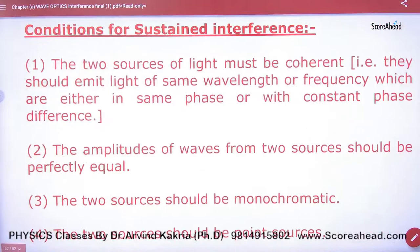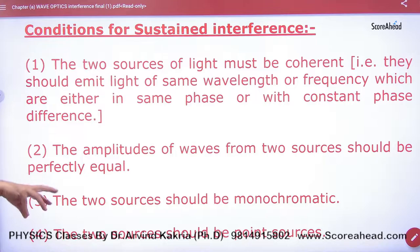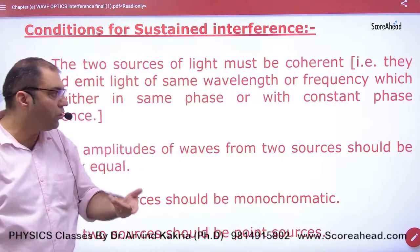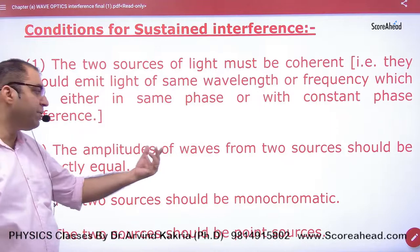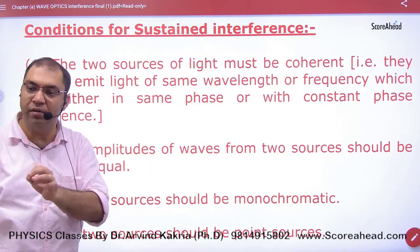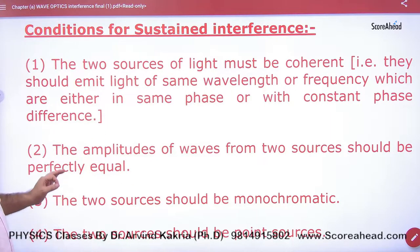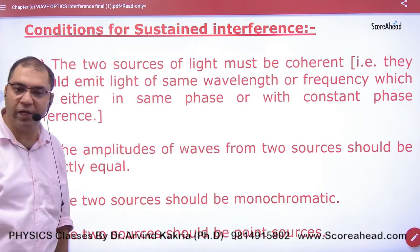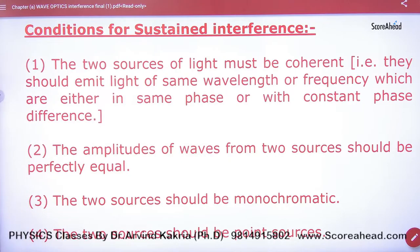For sustained interference, the conditions are: first, the sources of light must be coherent; second, the amplitude of waves from both sources must be exactly the same; third, the two sources should be monochromatic; and fourth, the two sources should be point sources — large bulb-sized sources should be replaced with tiny point sources.